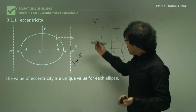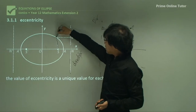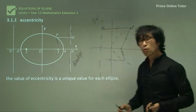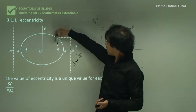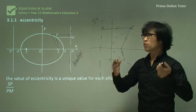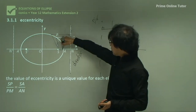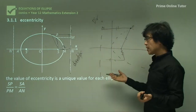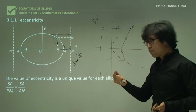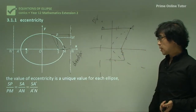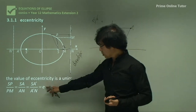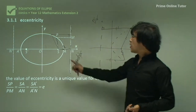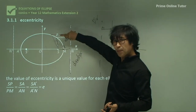The distance from focus S to point P on the ellipse, divided by the perpendicular distance from P to the directrix M, remains always the same value — no matter where P is. This ratio SP divided by PM is always a fixed value for a given ellipse. That particular value is called eccentricity. So eccentricity is the ratio between SP and PM.